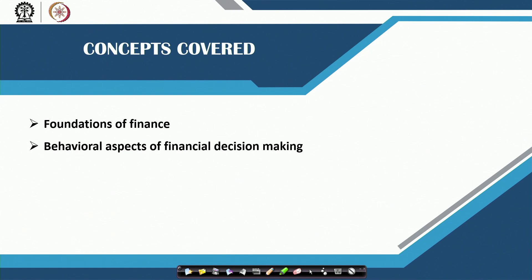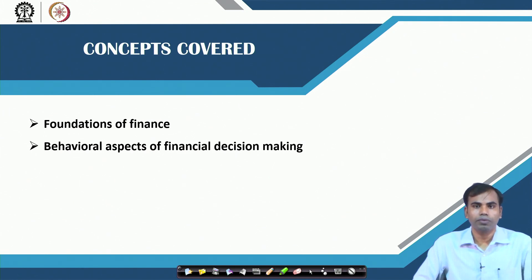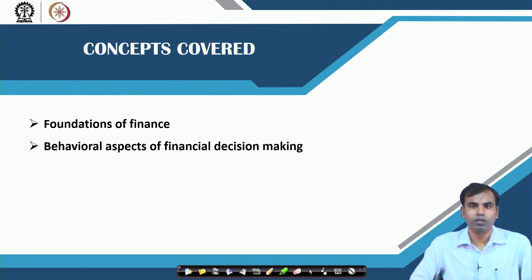Most financial decision making frameworks are based on some cash flows that we expect from the future, or the future value of the investment that we make today. For example, whether to invest in the stock market, whether to go for an MBA, or whether to buy a house or live in a rented one.